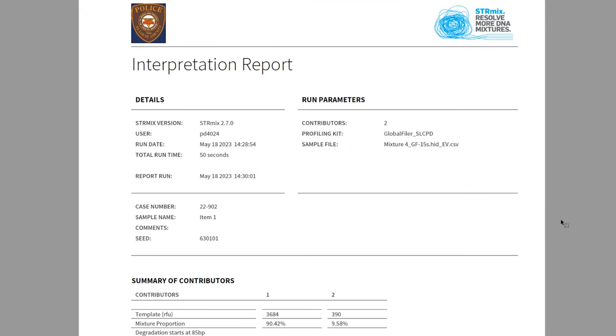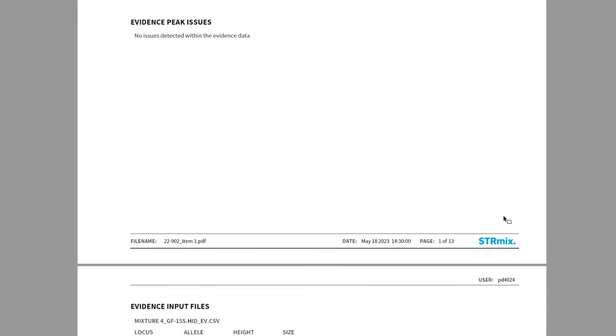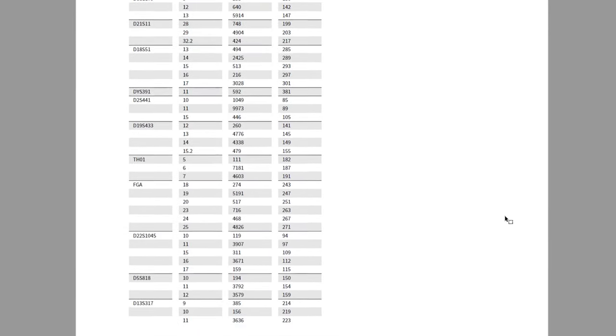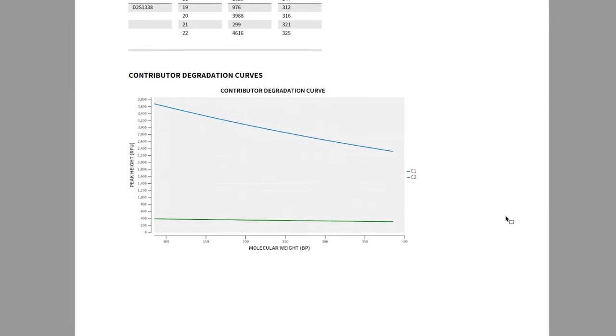The statistics aid the jury by providing weight to the association. It helps the jury understand if the association is strong or possibly weak. These results are summarized in the DNA report.